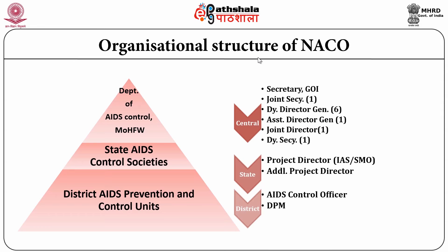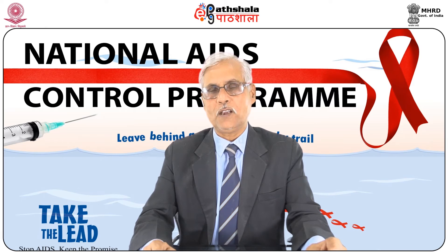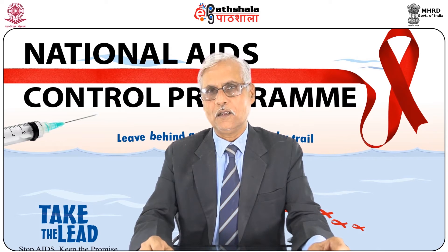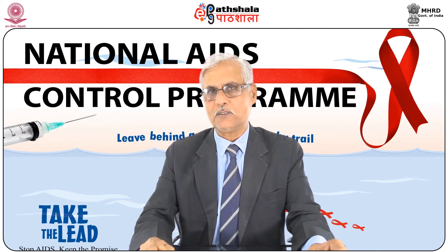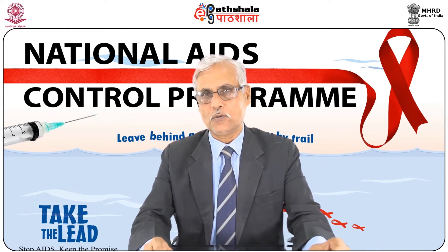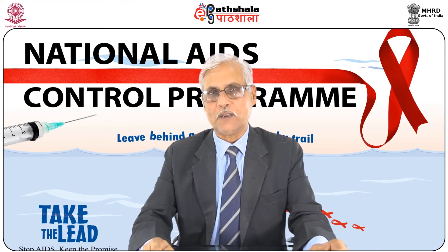The organizational structure of the National AIDS Control Program includes State AIDS Control Program Units at the base, then State AIDS Control Societies, and at the top the Department of AIDS Control under the Ministry of Health and Family Welfare. At the central level, the Secretary of Government of India is assisted by Joint Secretary, Deputy Director Generals, and other officers. At the state level there is a Project Director of General Administrative Officer rank, additional Project Directors, and at the district level, AIDS Control Officers and District Program Management Officers.